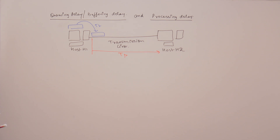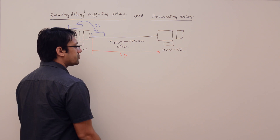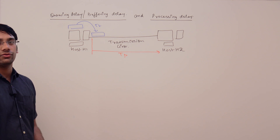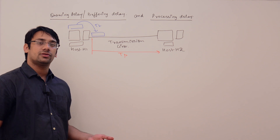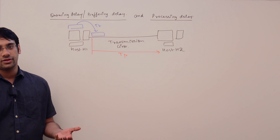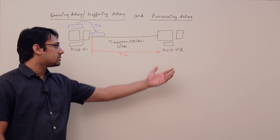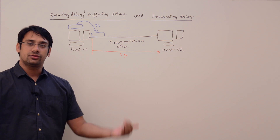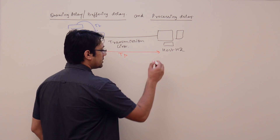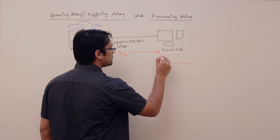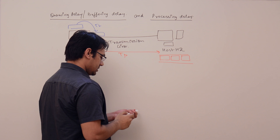When this packet reaches the destination host, it may not be processed immediately. Why? Because the host has an operating system which processes packets, and that OS may currently be doing some other tasks. The CPU may be busy with a different process, for example scheduling. In that case, the packet will be placed inside a queue.